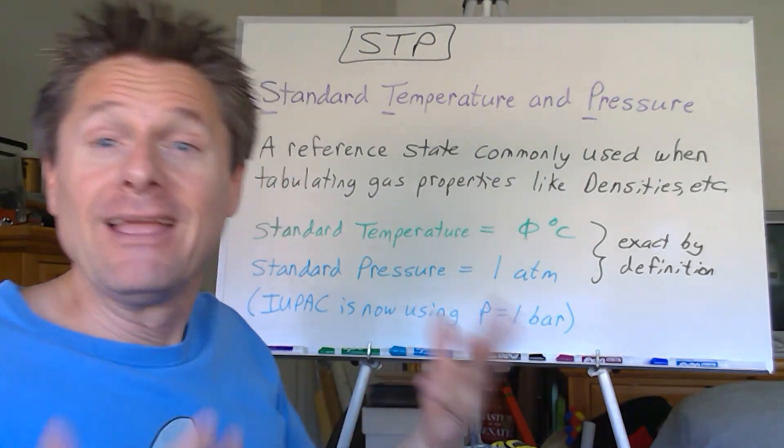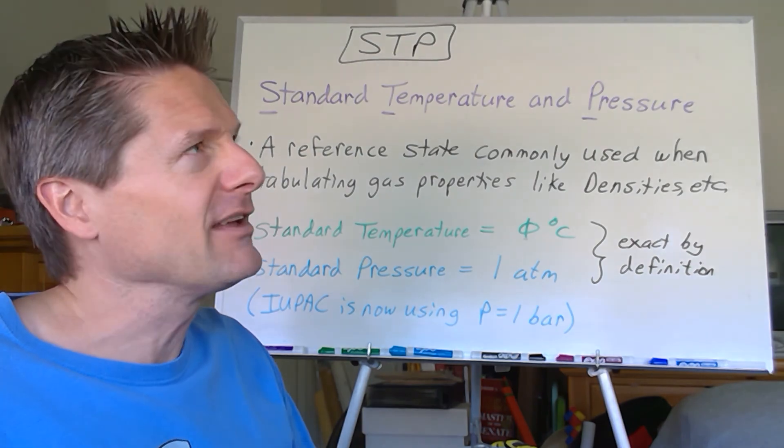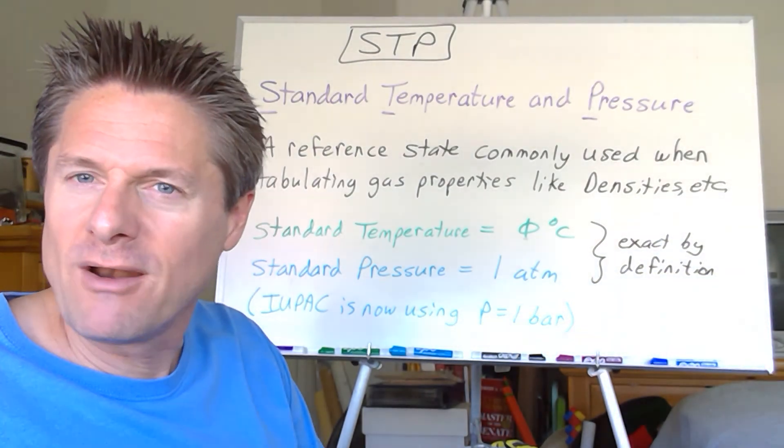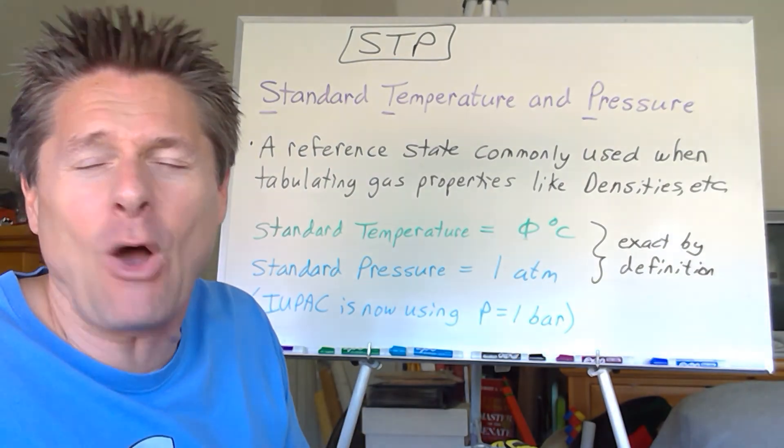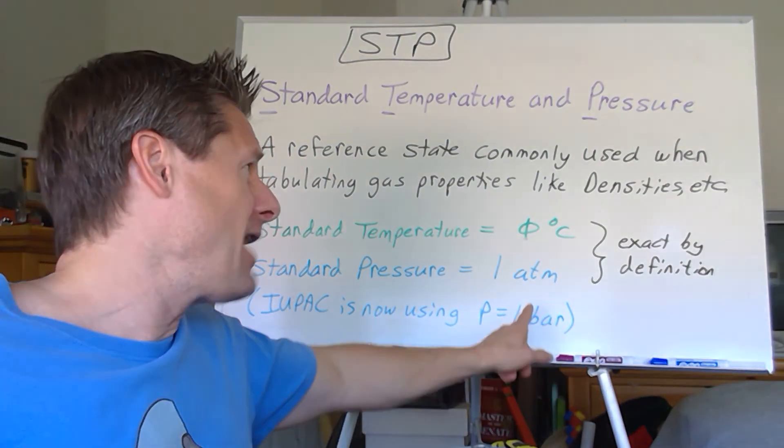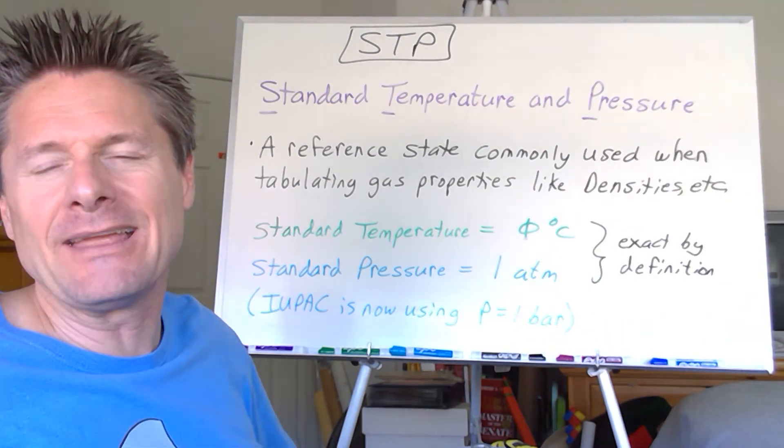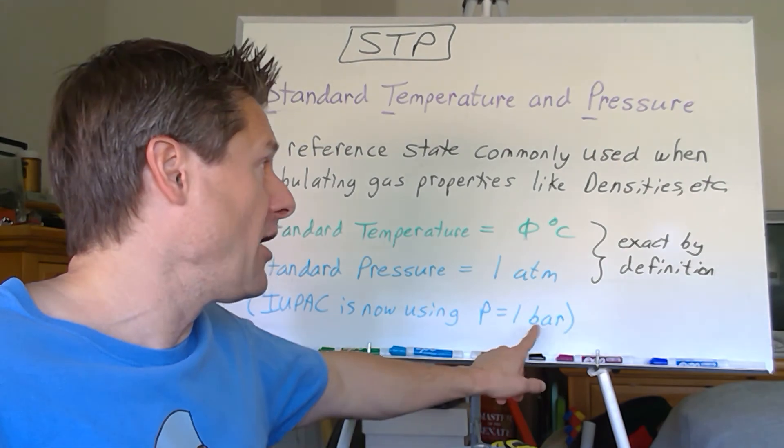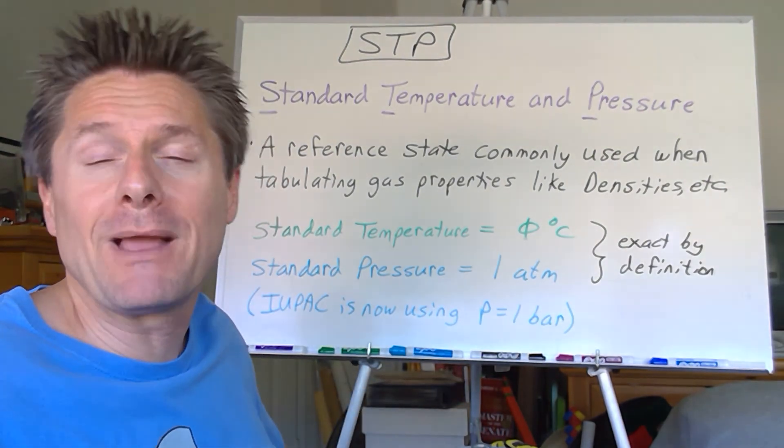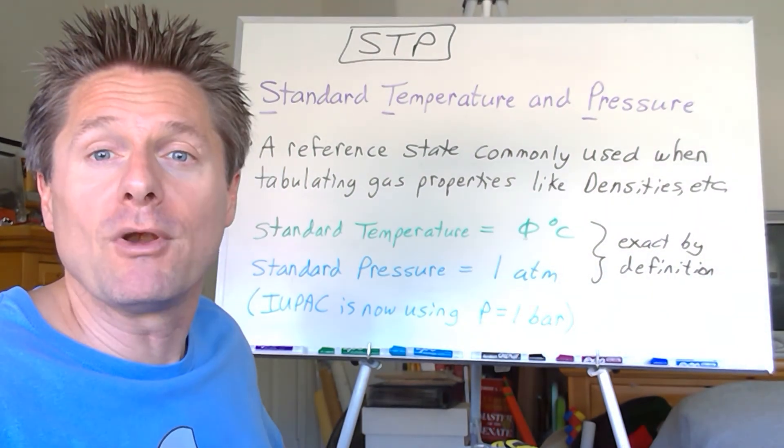So technically, standard pressure is one bar. It makes us so angry. We've been using one atmosphere our whole careers, and I'm not stopping now. So in my class, STP will be zero degrees Celsius and one atmosphere. Because if you use one bar, your calculations would be off a little bit because a bar is like 1.01325 bar per atmosphere. It's just a tiny correction.